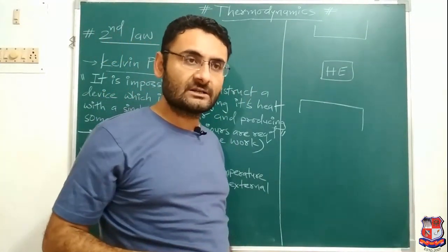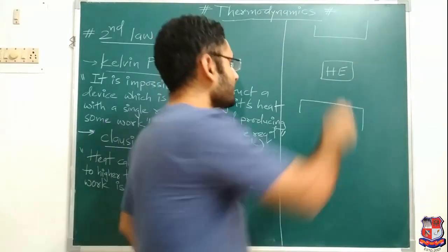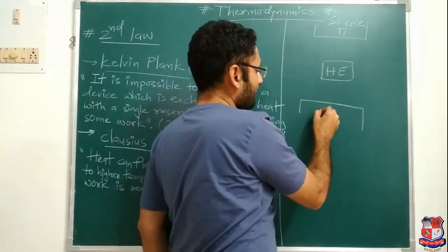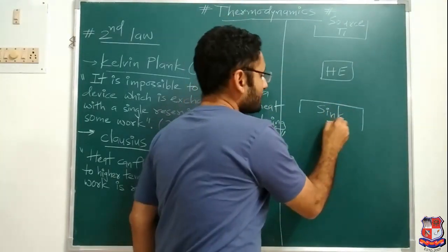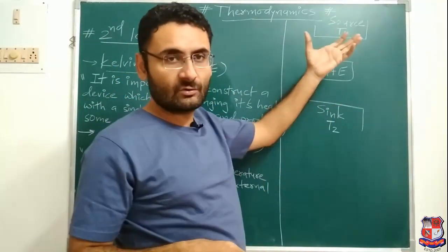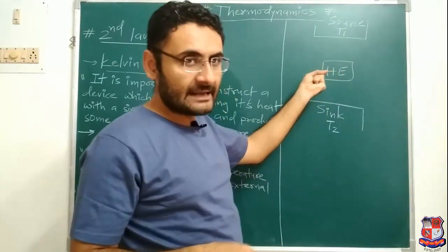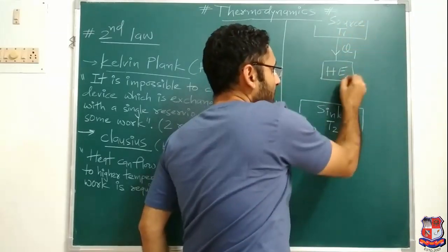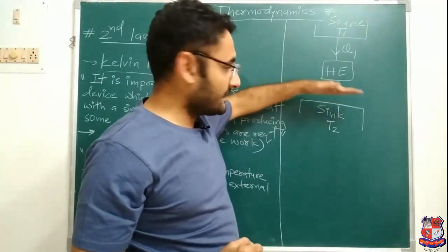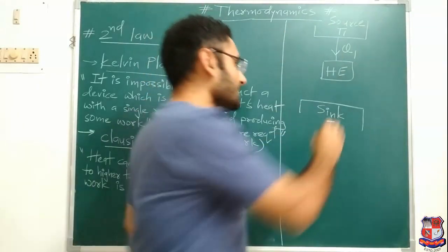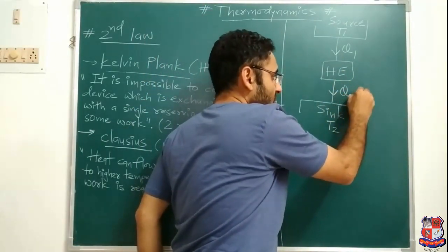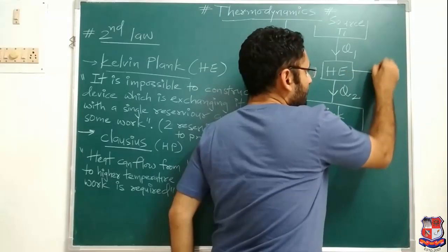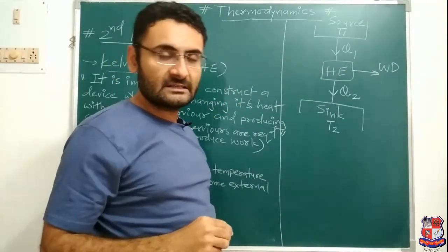Reservoirs have two types. The first type is known as source — source temperature is T1. The second type is the sink, at temperature T2. Source means it is the reservoir from which the heat engine absorbs heat energy Q1. Sink means the reservoir to which the heat engine rejects heat energy Q2 at temperature T2. Then the engine produces work. That is the diagram to understand the Kelvin-Planck statement.